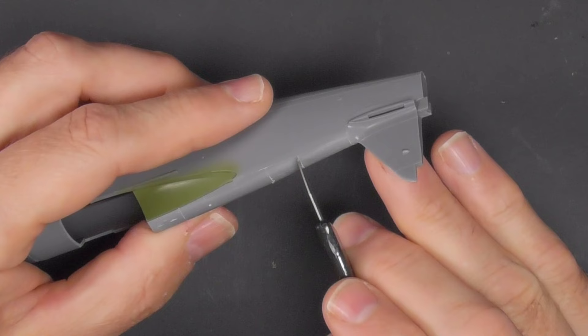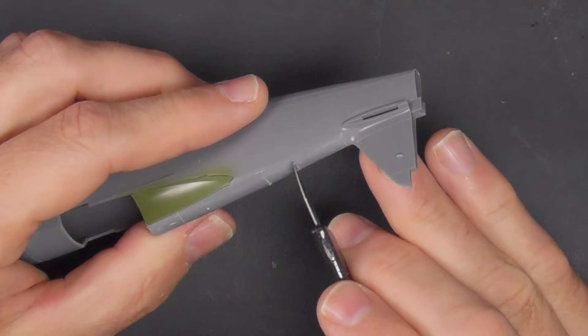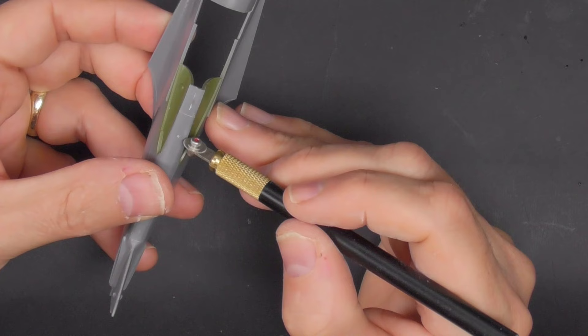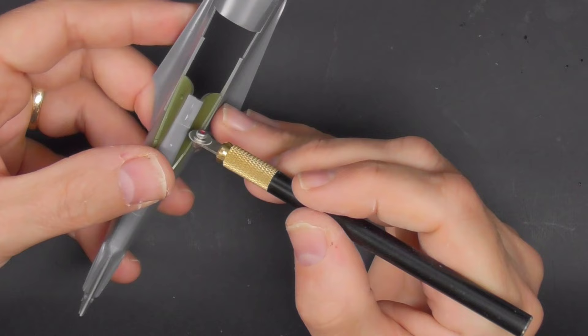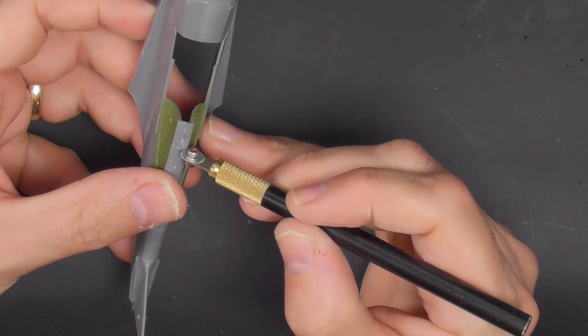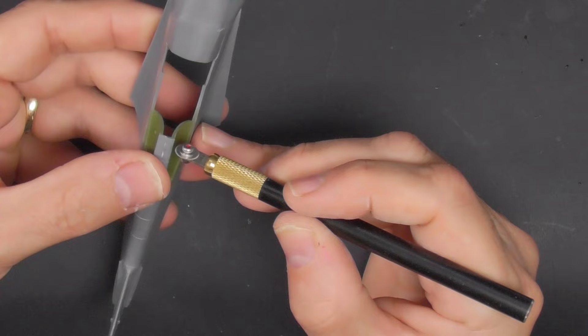That's the Trumpeter scriber—it is very sharp and it is finer than the Tamiya scriber, I do find.